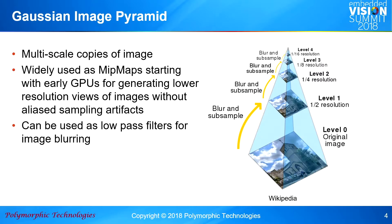The Gaussian image pyramid is basically blurring and subsampling, blurring and subsampling, so you've got all the reduction in resolutions. It was used, as I mentioned, in early GPUs where you wanted to zoom in on things but didn't want to have problems with aliasing as you started to do it. You can also use these for low-pass filters for image blurring.